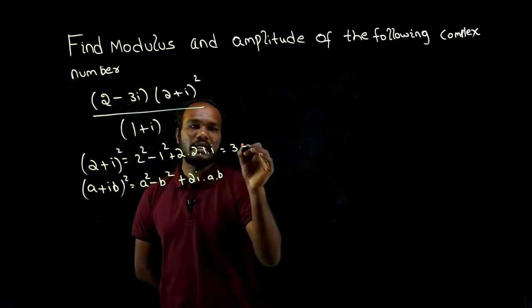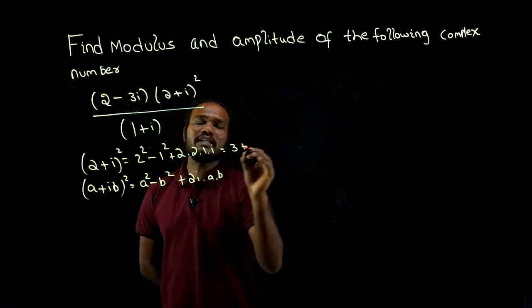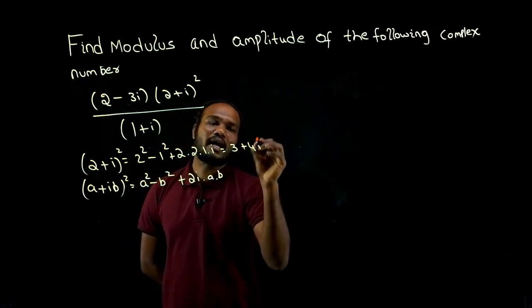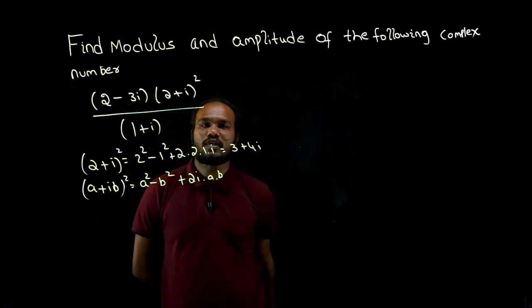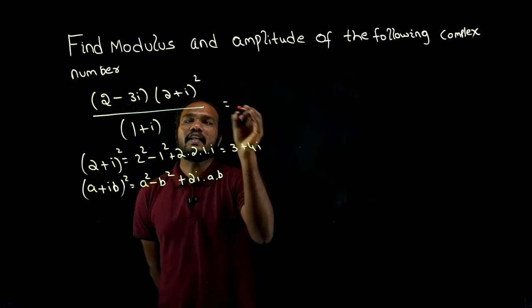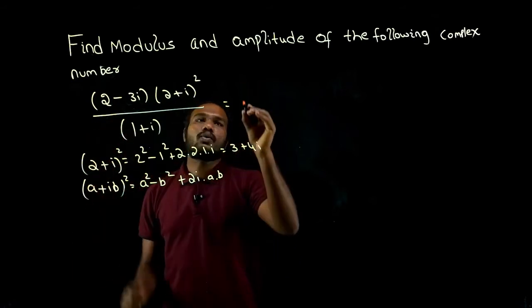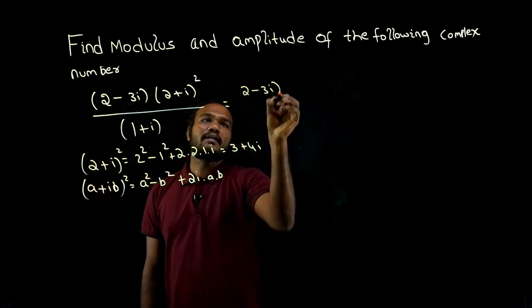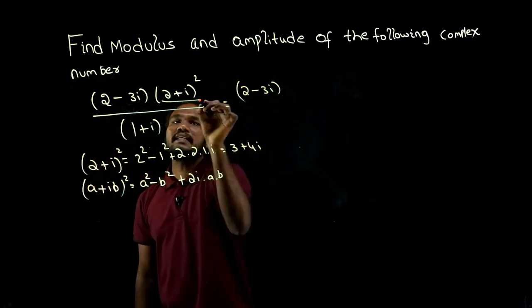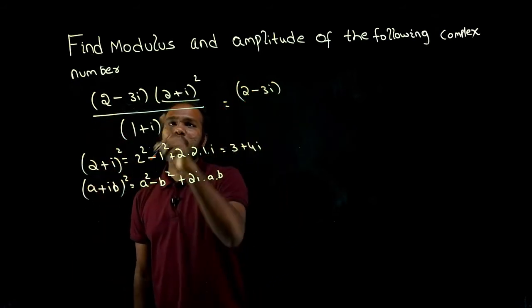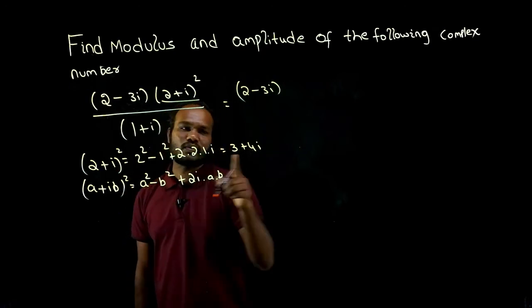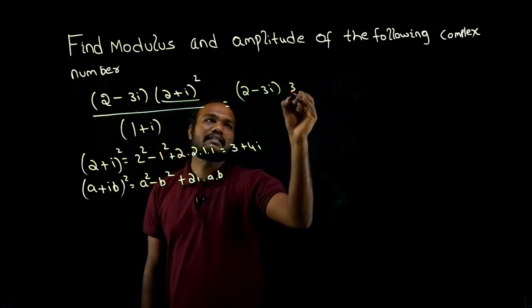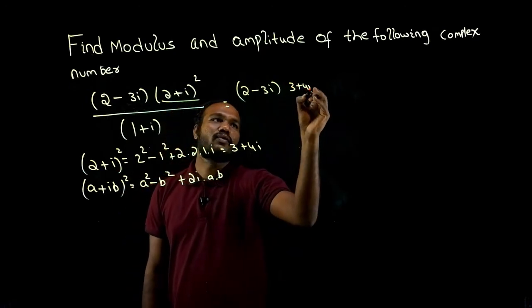Plus 2 into 2 is 4i. So now let's rewrite the question. The part 2 minus 3i has not been calculated yet, but (2 + i) whole square has been calculated — that is 3 plus 4i.